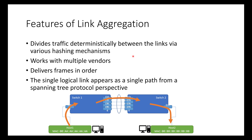A couple of features of link aggregation: it divides traffic deterministically between links via various hashing mechanisms, done to make sure things are delivered in order and works with multiple vendors. It delivers frames in order, and a single logical link will appear to be a single path from a spanning tree protocol perspective. This allows link aggregation to pass traffic across all four links without blocking any.